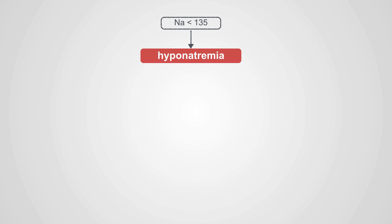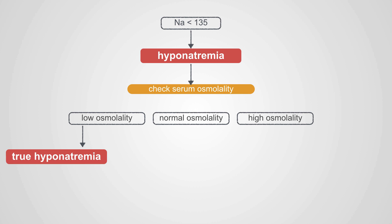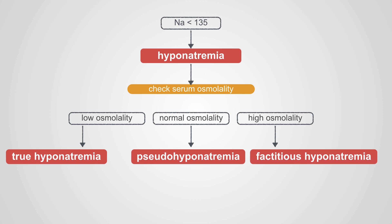Once you have a sodium less than 135 and a diagnosis of hyponatremia, you want to check the serum osmolality. If that serum osmolality is low, you have true hyponatremia. If it's normal, you have pseudo-hyponatremia — a lab error due to high fats or high proteins in the blood. If you have a high osmolality, you have factitious hyponatremia, where the sodium is truly low but doesn't carry the same implications as true hyponatremia.